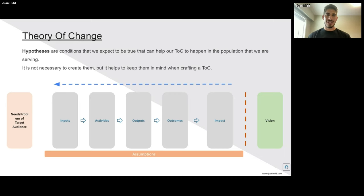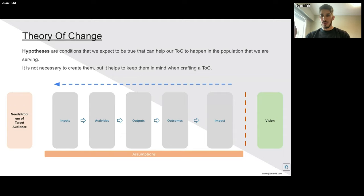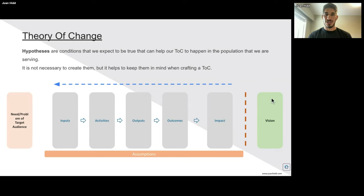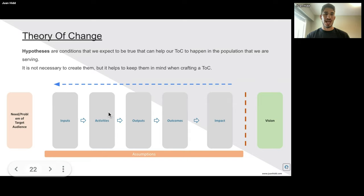We can also have a hypothesis — conditions that we expect to be true that can help our theory of change happen in the population we're serving. It's not necessary to create a hypothesis, but it helps when crafting a theory of change. For example: if we do A, B, or C and these assumptions are applicable, then we will create an impact. Some people create a theory of change from backwards — starting with the vision or mission, then asking what impact they want, what outcomes they need, what outputs, what key activities, and what inputs are the minimum resources needed.